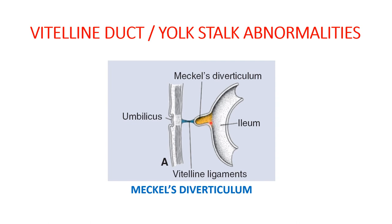Now for the vitelline duct or yolk stalk abnormalities. The vitelline duct, which separated the cranial and caudal limbs of the primary intestinal loop and communicated with the yolk sac through the umbilicus, normally regresses. However in 2–4% of people, small portions of the vitelline duct may remain persistent, creating an outpocketing of the ileum called Meckel's diverticulum.